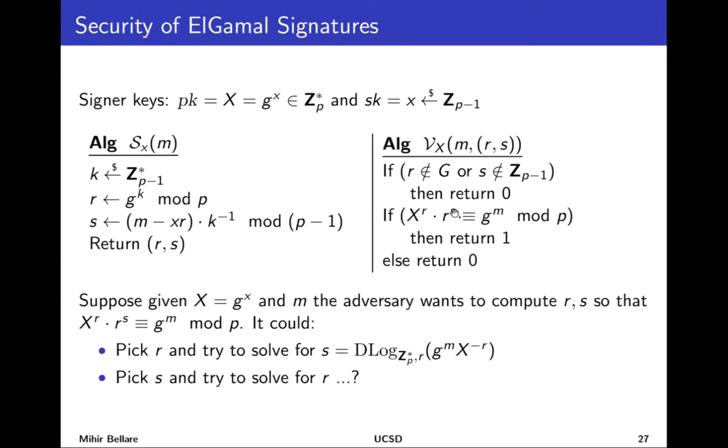So it says maybe I'll try something else. Maybe I'll first pick s in some way and try to solve for r. But then you run into the difficulty that r is in two places. One up here, one down here. It's not clear how you even start writing equations to solve for it. So all that looks pretty good from the point of view of security. This is looking like well our adversary is going to have a seriously hard time violating security.